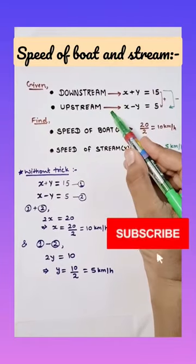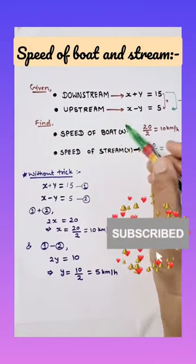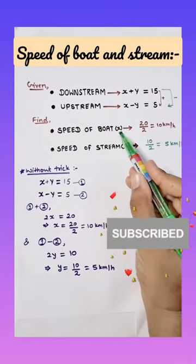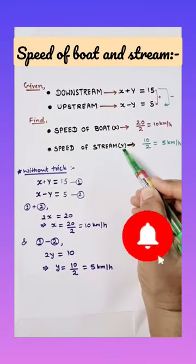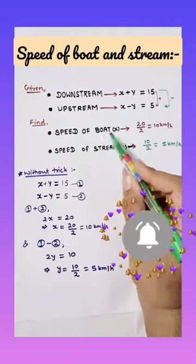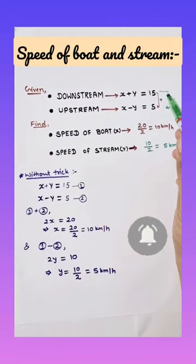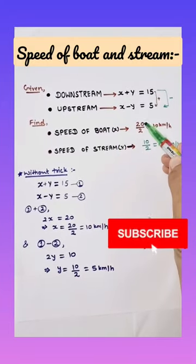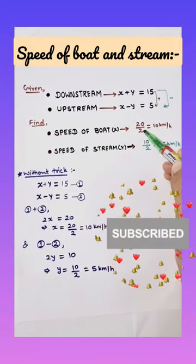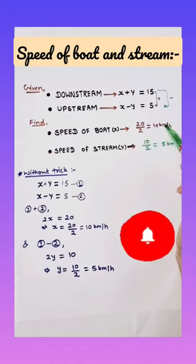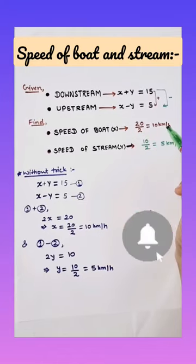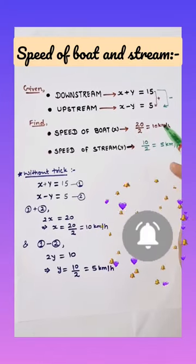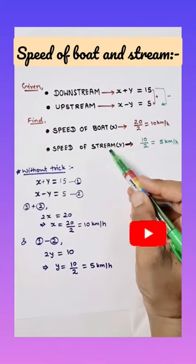Here downstream and upstream are given and we have to find speed of boat and stream. For finding speed of boat we have to add these two speeds, so we get 20. Then we divide it by 2 always, so we get 10 km per hour. This is the speed of boat.